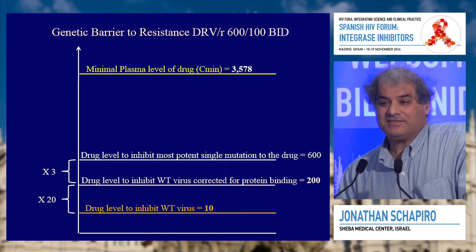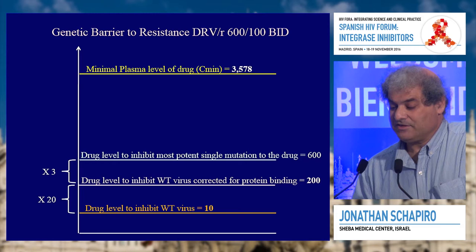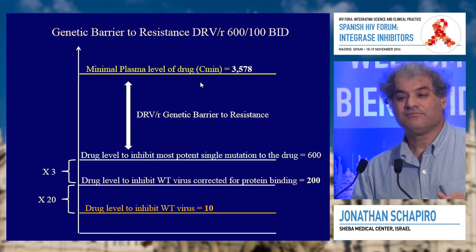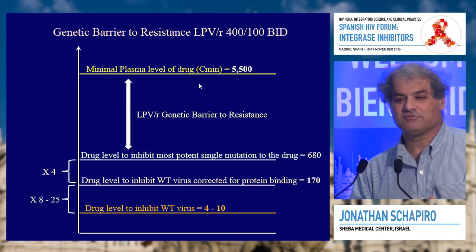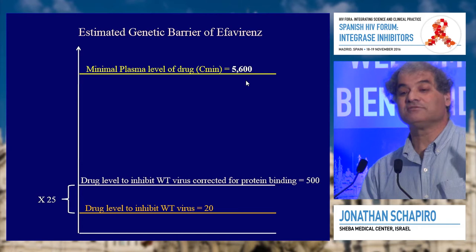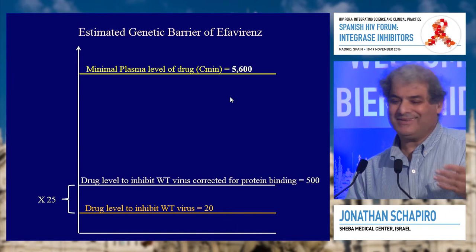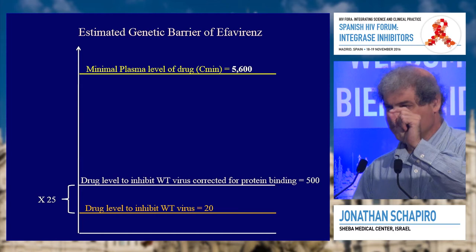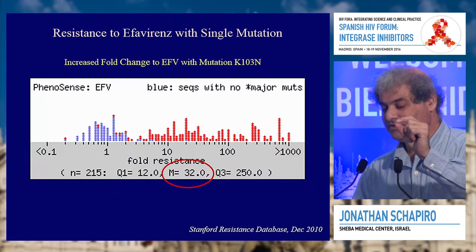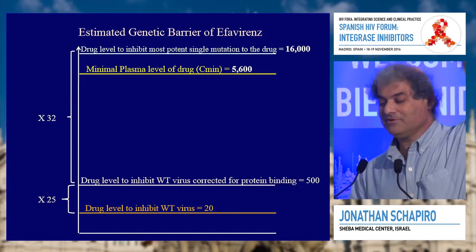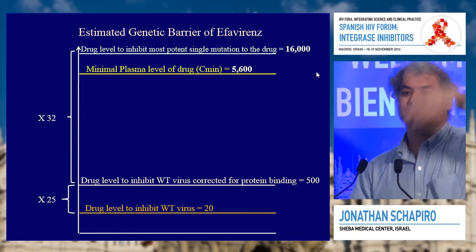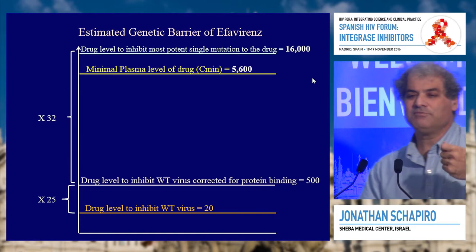Getting lower fold resistance increases your genetic barrier. If you put in the numbers, the plasma levels of darunavir are well above what you need to inhibit the single mutation — you have a high genetic barrier drug. Lopinavir is also a high genetic barrier drug. Now take efavirenz — you get great drug levels, very high, and even correcting for protein binding you're way above what you need for wild-type. But one single mutation gives 32-fold resistance, and suddenly the drug can't keep up. That is a low genetic barrier drug.